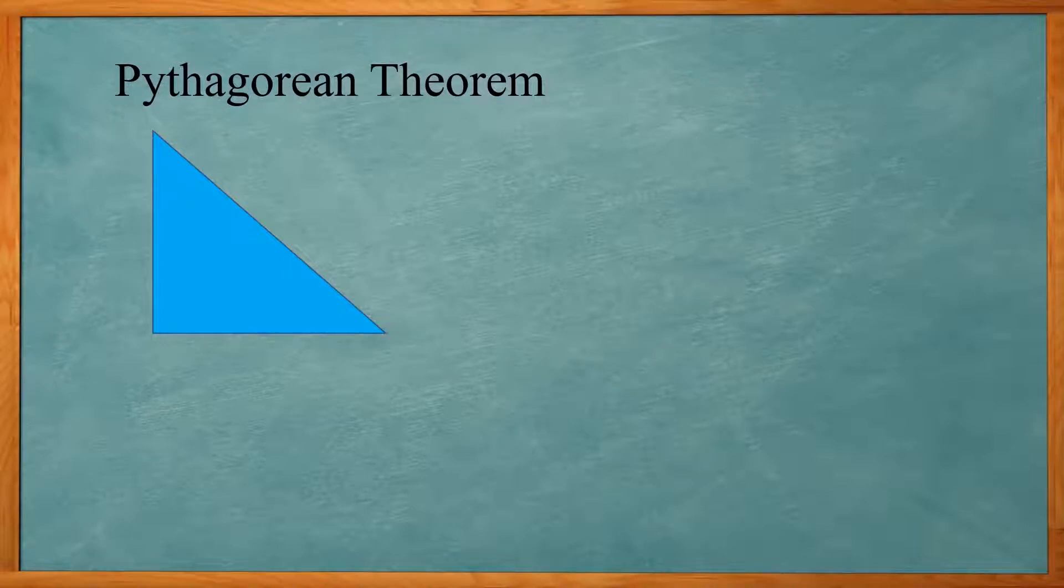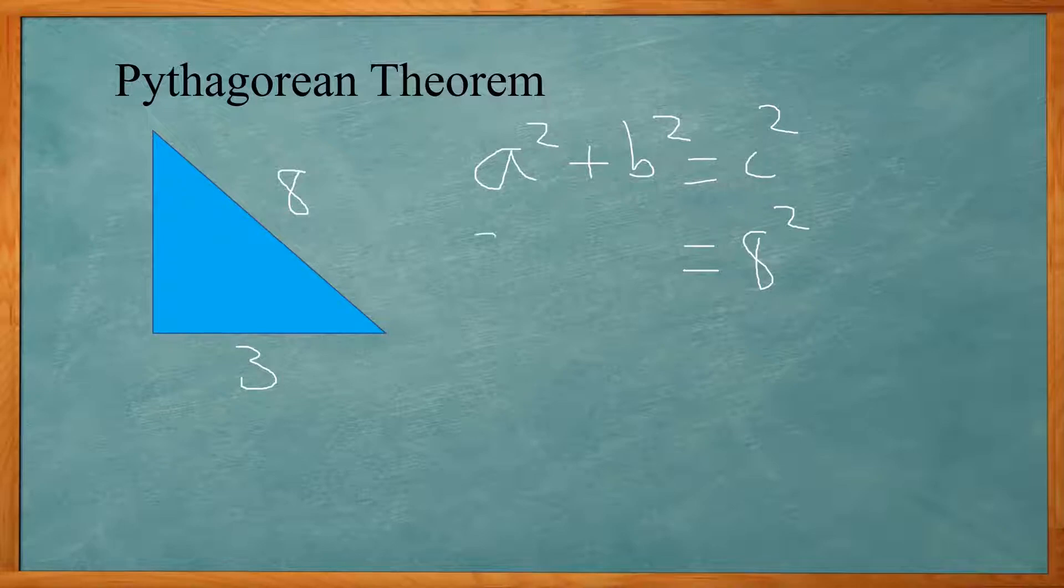In my second example, we're going to have hypotenuse 8 and leg 3. We know the hypotenuse and one of the legs and we need to solve for the other leg. We have a squared plus b squared equals c squared. The hypotenuse is 8 squared and one of the legs is 3, so 3 squared plus b squared equals 8 squared.